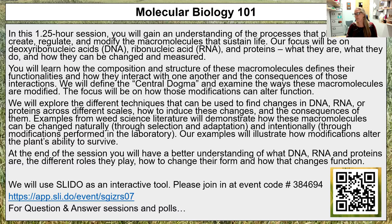I'm going to rely on examples from the weed science literature to demonstrate how changes happen naturally through selection or adaptation, or intentionally through modifications in the lab. Hopefully these illustrations will help you understand how modifications alter the plants' abilities to survive, so at the end of this you'll have a better understanding of what these macromolecules are, what roles they play, and how changing their form changes their function.